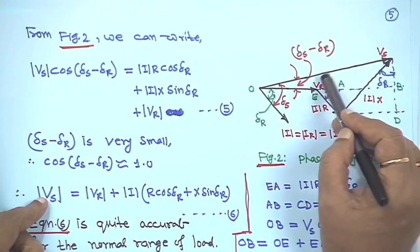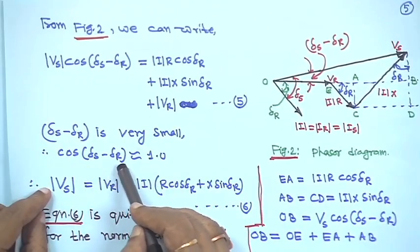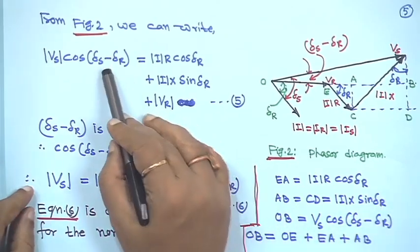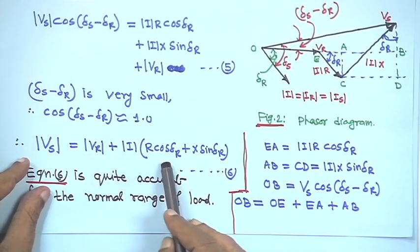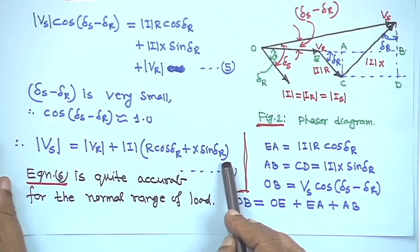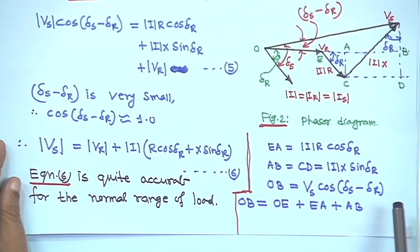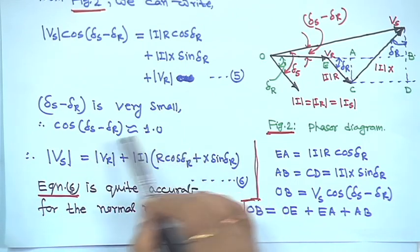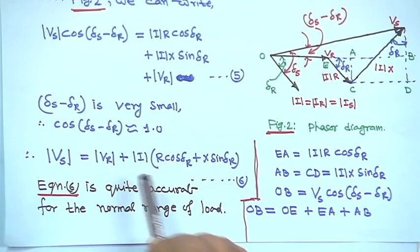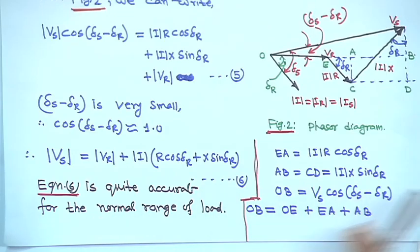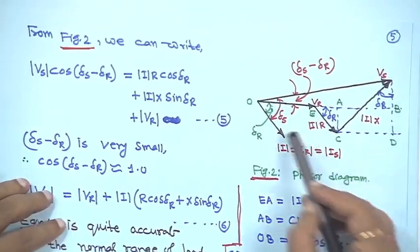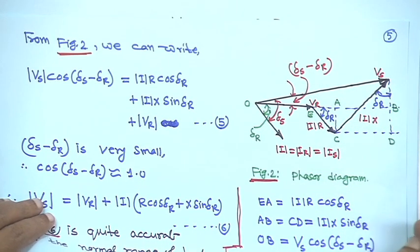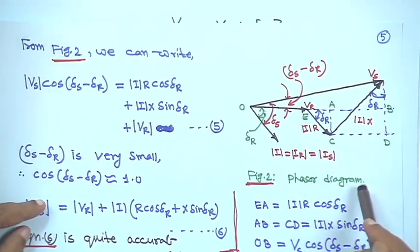Since the angle (delta_s − delta_r) between V_S and V_R is very small for normal loading, cos(delta_s − delta_r) ≈ 1. This gives the approximate equation: |V_S| ≈ |V_R| + I·R·cos(delta_r) + I·X·sin(delta_r), which is equation 6. This approximation is quite accurate for the normal range of load. As an exercise, you should take I as reference and redraw the phasor diagram to see how it compares.